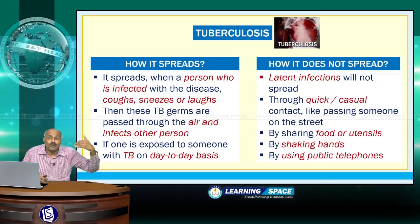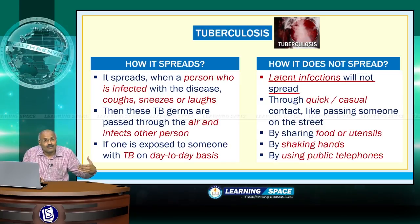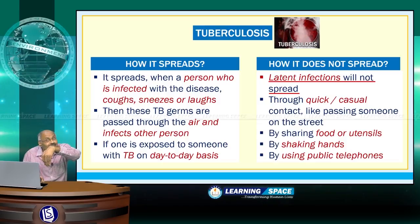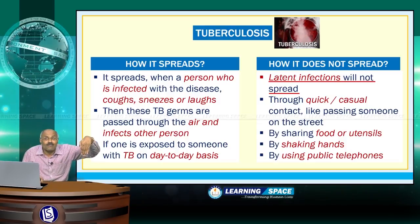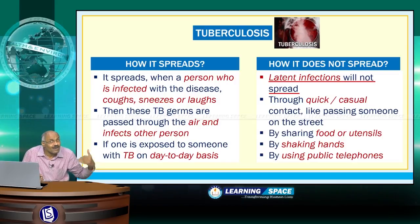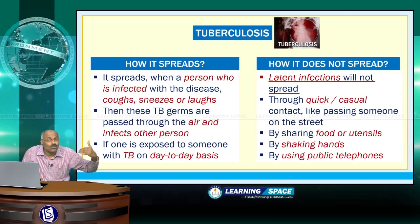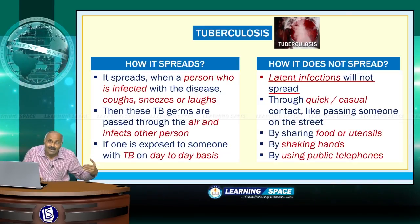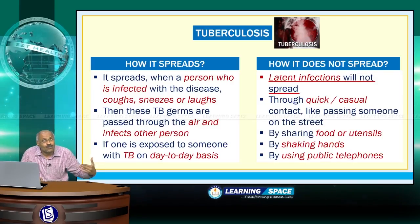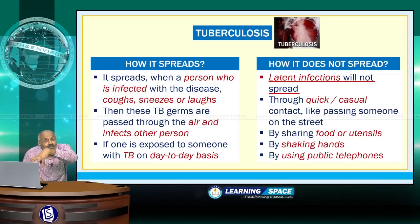Tuberculosis does not spread through latent infections, since during the first stage it will not spread. It does not spread through quick or casual contact like passing someone on the street, by sharing food or utensils, by shaking hands, or by using public telephones.